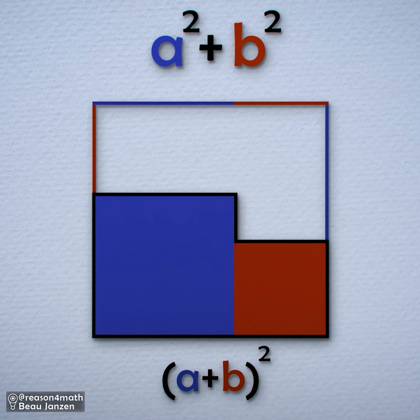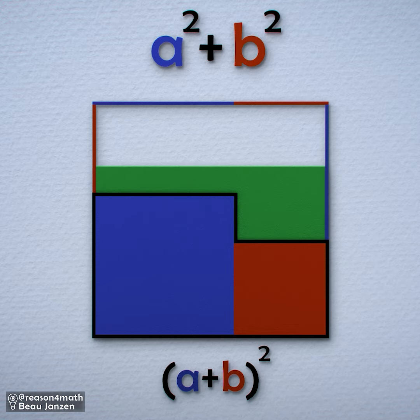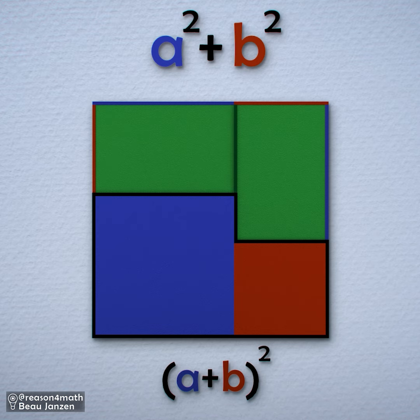The original area we're looking for is A plus B squared minus the area we added on. We can slice through this extra area to create two identical rectangles. Each rectangle measures A on one side and B on the other.